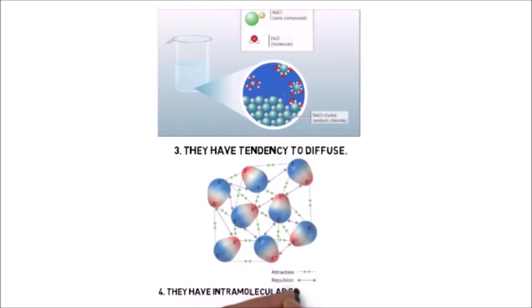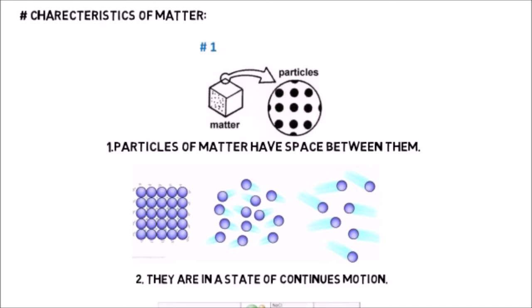Number 1: Between every particle of matter there is a little space called an intra-molecular gap. Number 2: Particles of matter are in a state of continuous motion, because motion gives them kinetic energy. If we increase the temperature, the kinetic energy of particles will increase and they move faster.